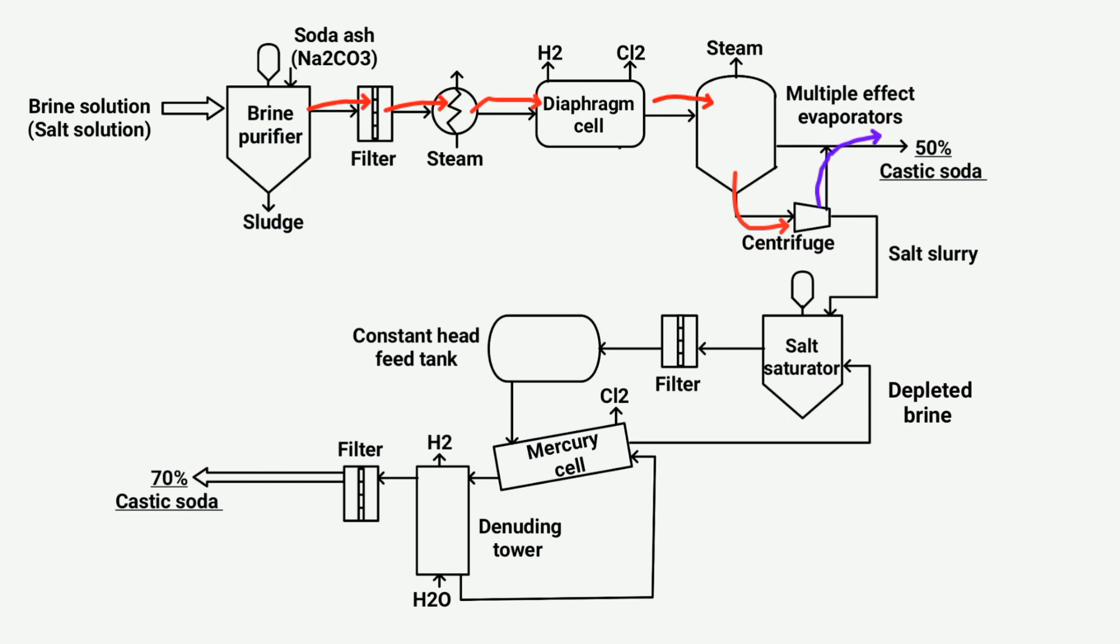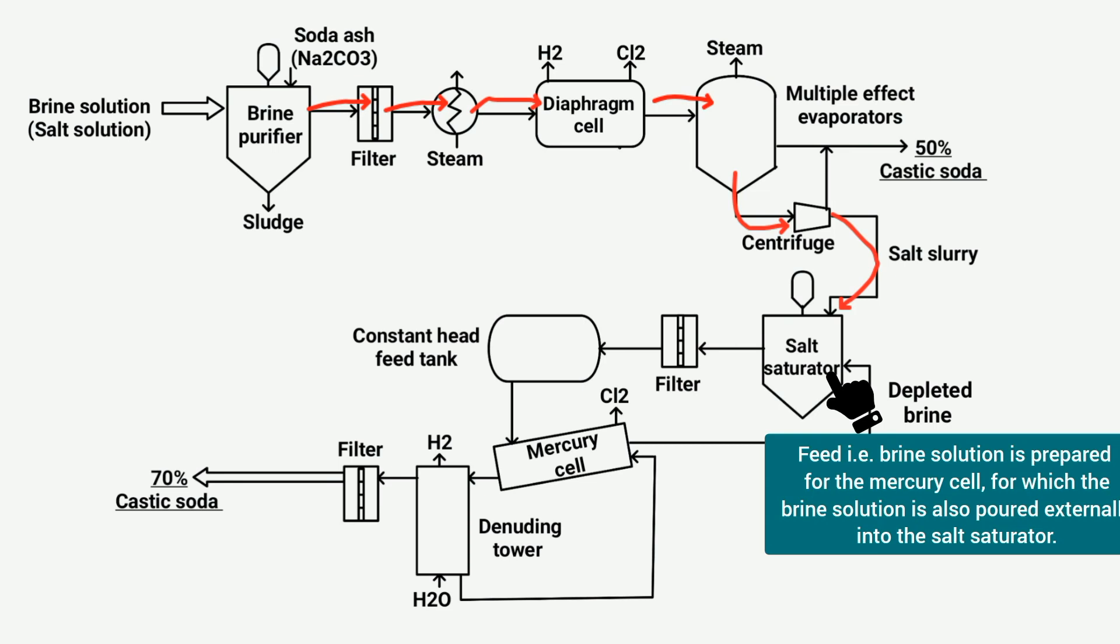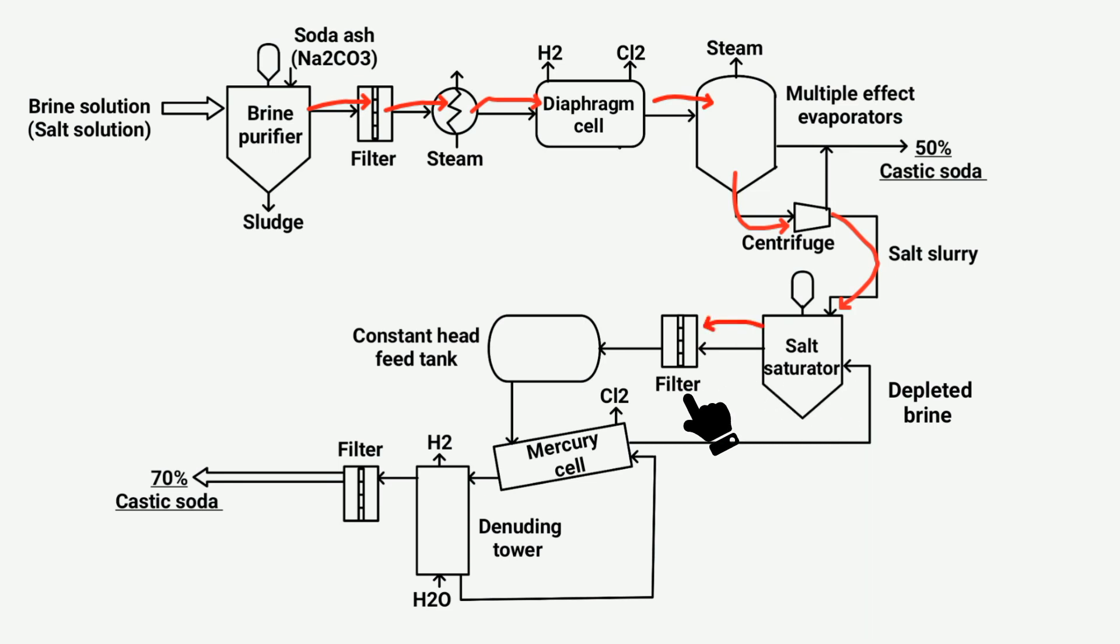Caustic soda without solid particles undergoes further purification, while the salt slurry is sent to a salt saturator for thermal treatment. After the salt saturator process, the brine solution is filtered and stored in a constant head feed tank.